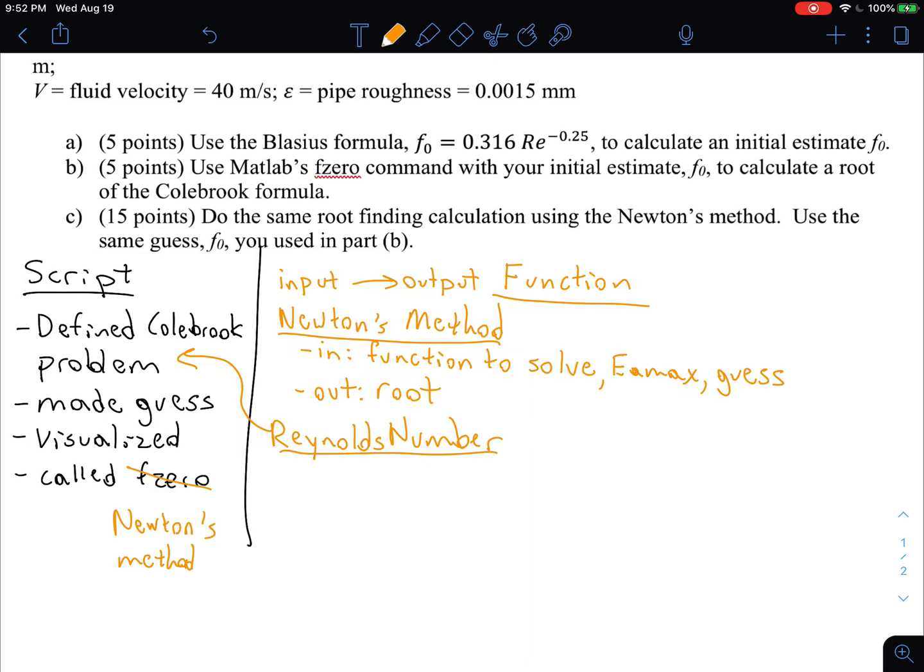And then we're also going to write a function called approximate error, open method. So Newton's method is an open method. And this goes into the Newton's method function. This is the function that Newton's method will call when it's deciding when to stop.